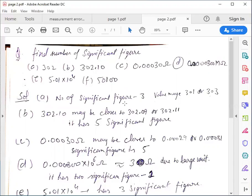Now here we calculate significant figures in each question. So A has 3 significant figures because value may be close to 301 or 303.